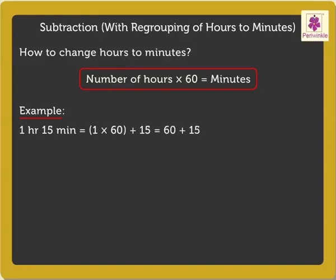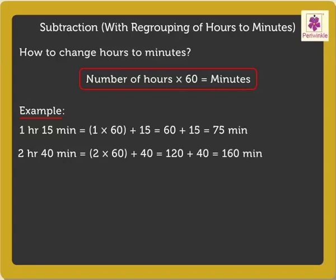2 hours 40 minutes is equal to 2 times 60 in the brackets plus 40, which equals 120 plus 40, which equals 160 minutes.